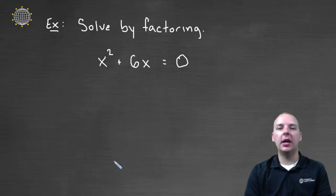In this example, we're going to solve the quadratic equation x² + 6x = 0 by factoring.